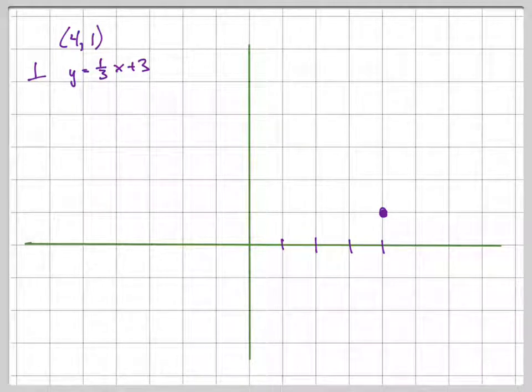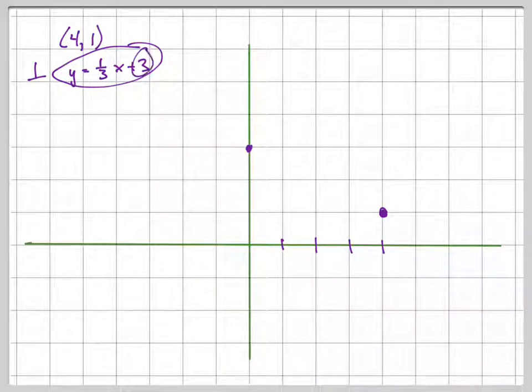So we know it goes through that point. Now, it says it's perpendicular to this line right here. Let's just graph it - we don't have to do this, but let's do it for fun. Good practice. There's the point (0, 3), right? That's the y-intercept.